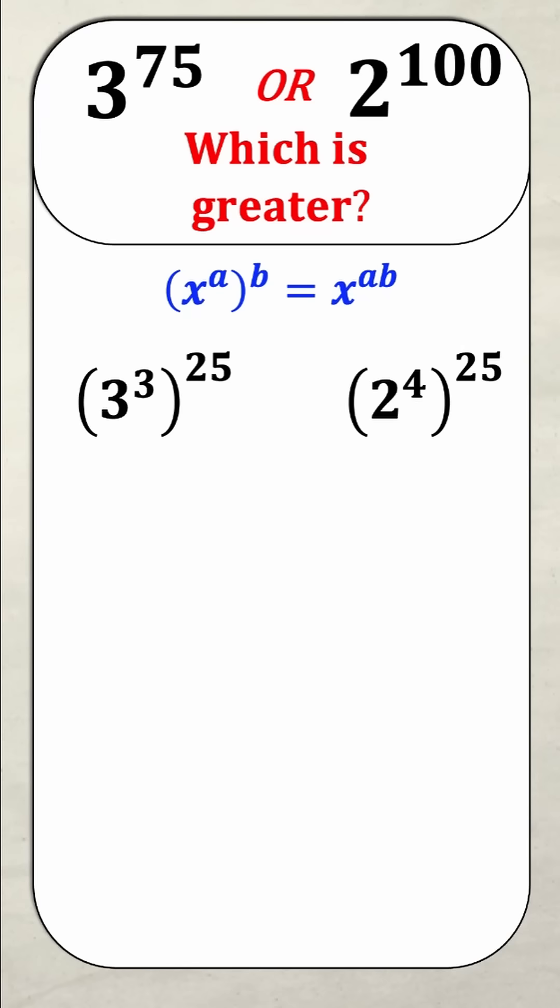Well now let me just simplify what's in the brackets. So 3 to the power of 3 is 3 times 3 times 3 which is 27, so 27 to the power of 25. And 2 to the power of 4 is 2 times 2 times 2 times 2 which is 16, so 16 to the power of 25.